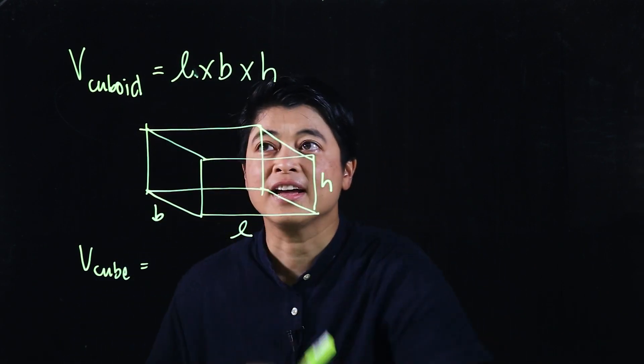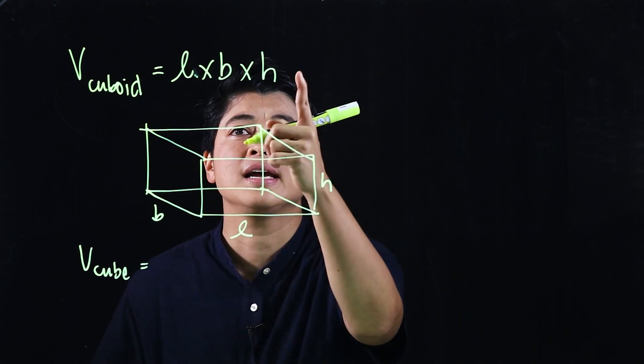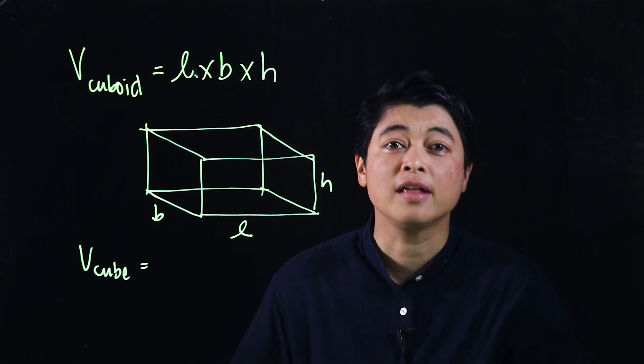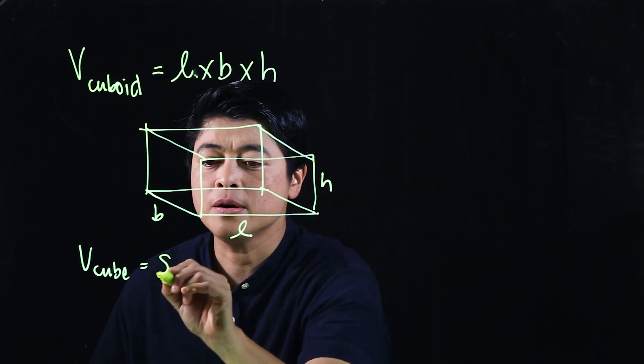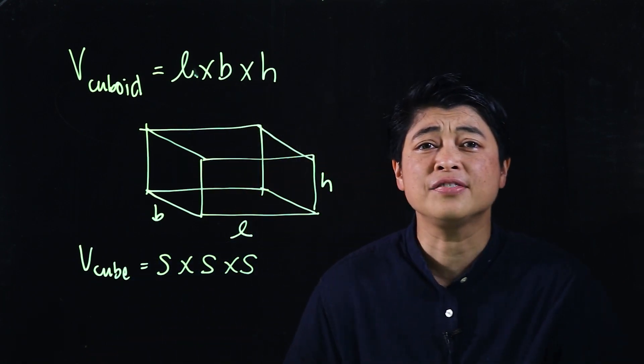In a cube, a cube is a perfect cuboid. So that means the length, the breadth, and the height are all the same. So for a cube, it's side times side times side.